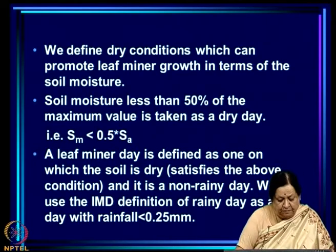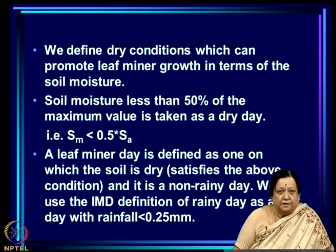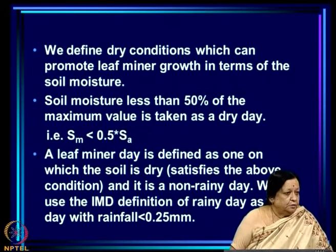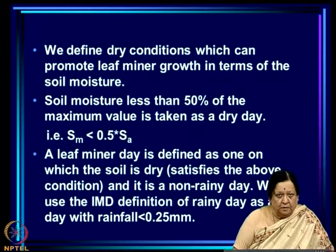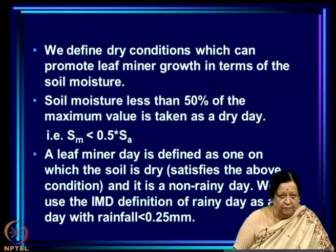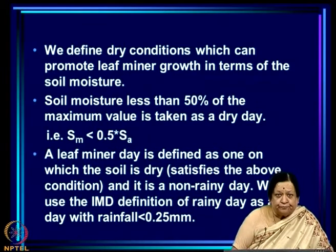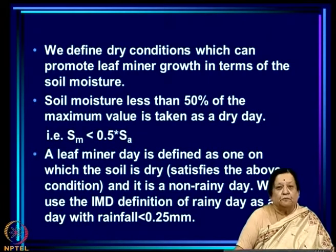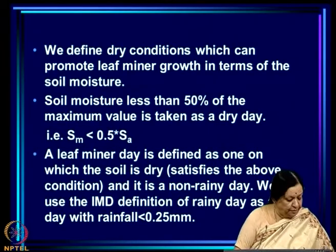Soil moisture less than 50 percent of the maximum value — where the maximum is total field capacity minus wilting point — is taken as a dry day. A leaf miner day is defined as one on which the soil is dry and it is a non-rainy day, using the IMD definition of a non-rainy day as rainfall less than 0.25 millimeters.